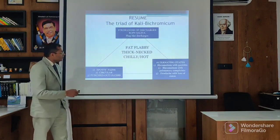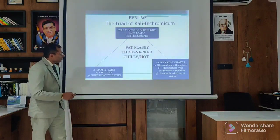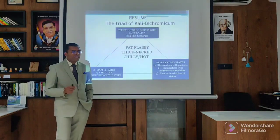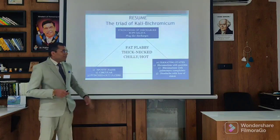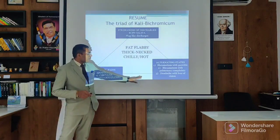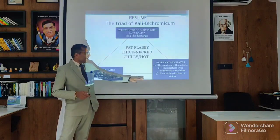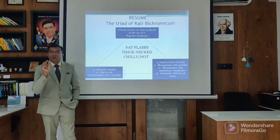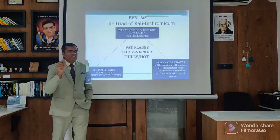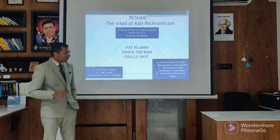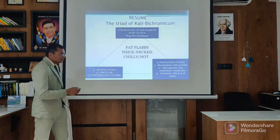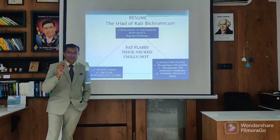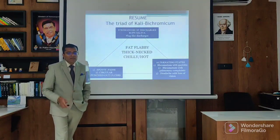Kali Bichromicum: fat, flabby, thick neck, chilly or hot. Mostly Kali Bichromicum has stringy, ropey discharge, tenacious discharge, ropey saliva, and that leads to plug sensations. Kali Bichromicum is the remedy for rheumatism - rheumatism with gastritis, rheumatism with respiratory complaint, headache with loss of vision. Kali Bichromicum has a syphilitic concentrating pain - that is a spotty pain. You can find oxalic acid in Kali Bichromicum. Spotty pain is very important - circular punch-out ulcer, very concentrated, everything is concentrated at one point, punch-out - this is syphilitic.